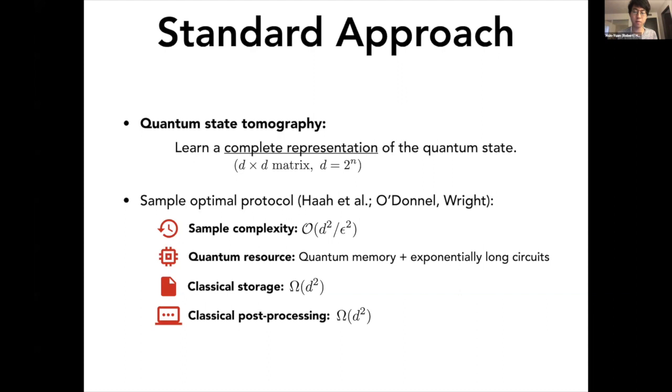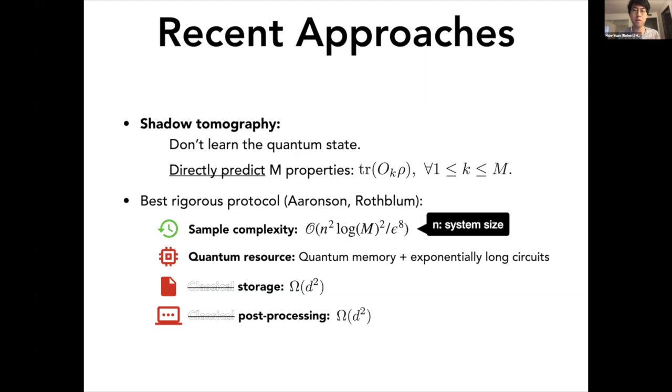In order to circumvent this exponential scaling, there have been several recent approaches. One very nice theoretical result is called shadow tomography, where the key idea is to not learn the full representation, but just directly predict a large number of properties given as expectation values of observables. The best rigorous protocol is due to Aronson and Rothblum, where they showed that the number of copies you need to see is actually only n squared, quadratic in the system size, and polylogarithmic in the number of properties you wanted to predict.